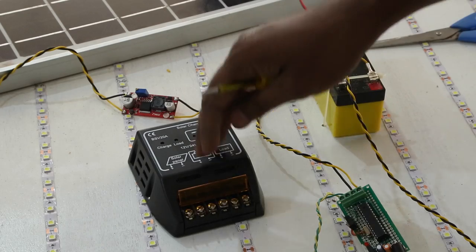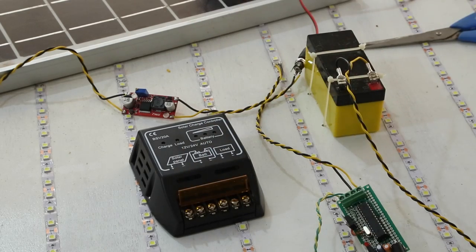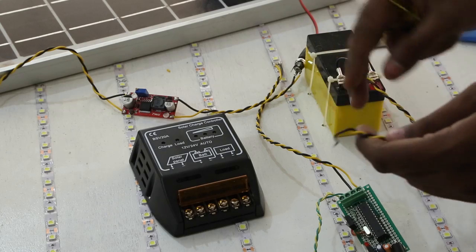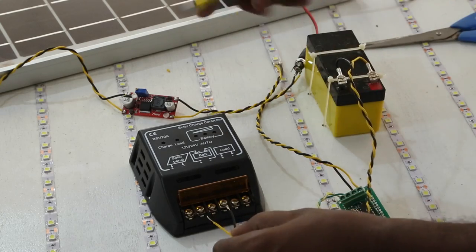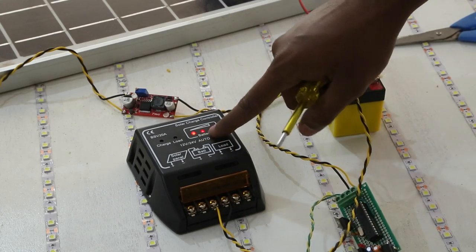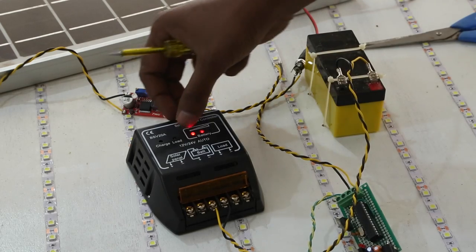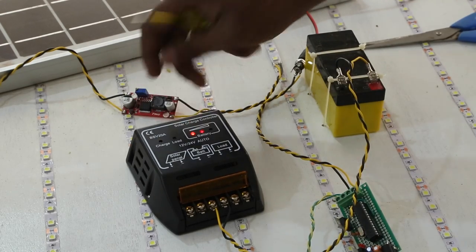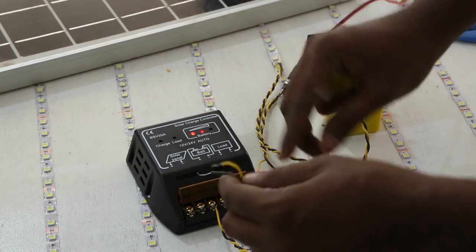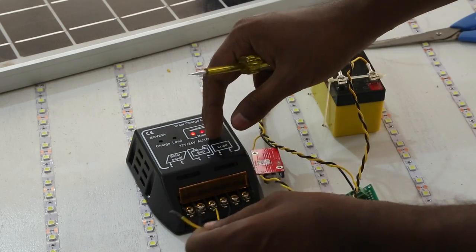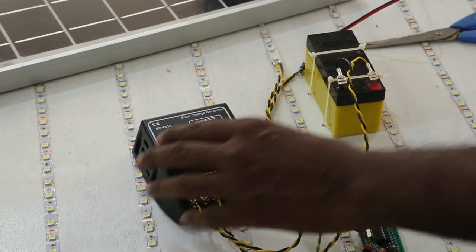Before connecting the solar panel power terminals, the manual says I have to connect the battery first. It immediately starts lighting up showing the battery is charged almost 75%, which is good. Then I can go ahead and connect the solar panel.